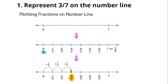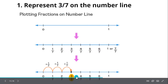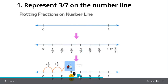Instead of 0/7 we write 0 as it is. The points in between are 1/7, 2/7, 3/7, 4/7, 5/7, and 6/7. We have to represent 3/7, so find where 3/7 is and mark it — here it is 3/7.